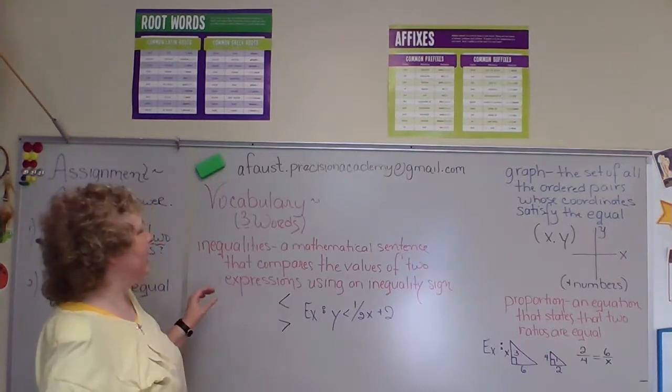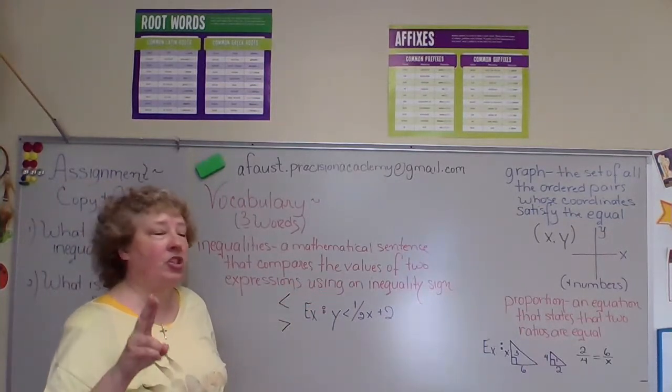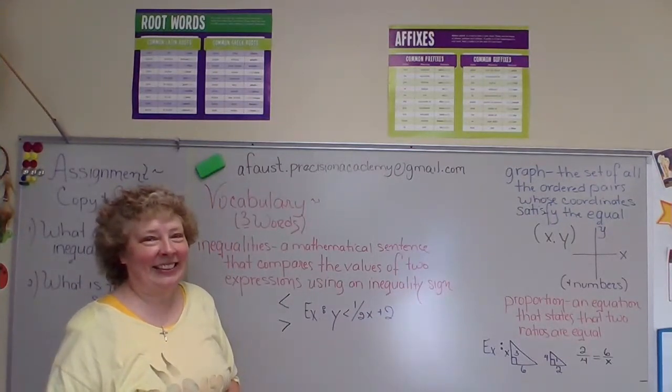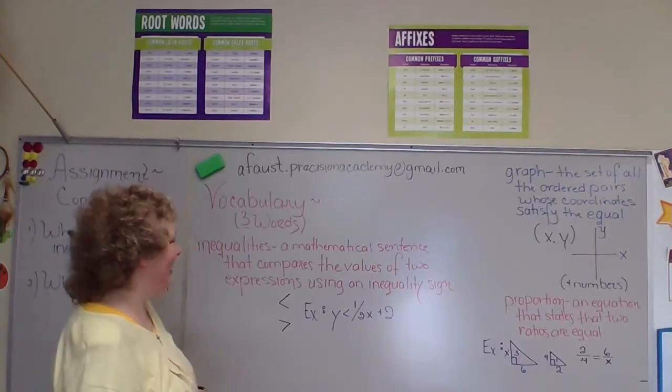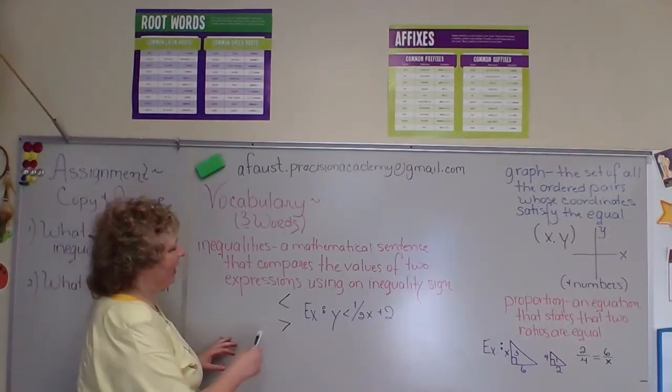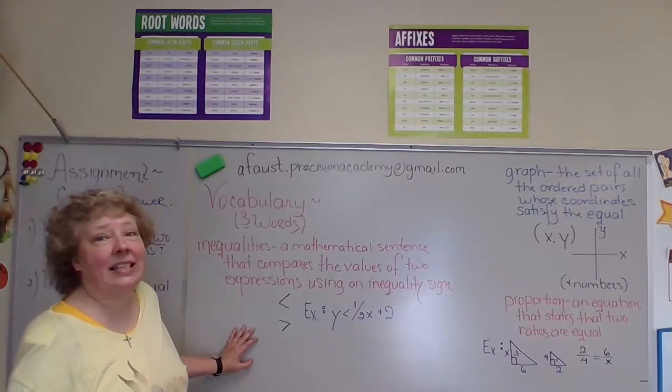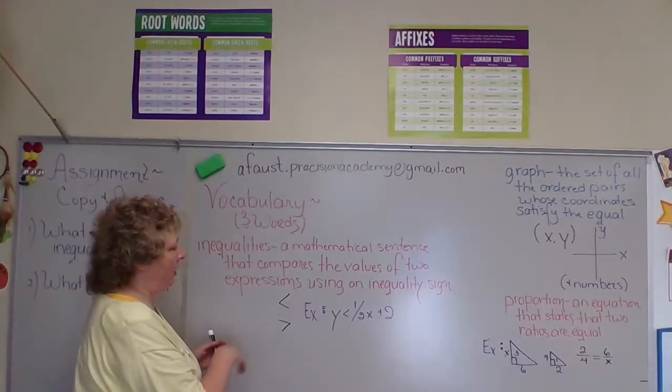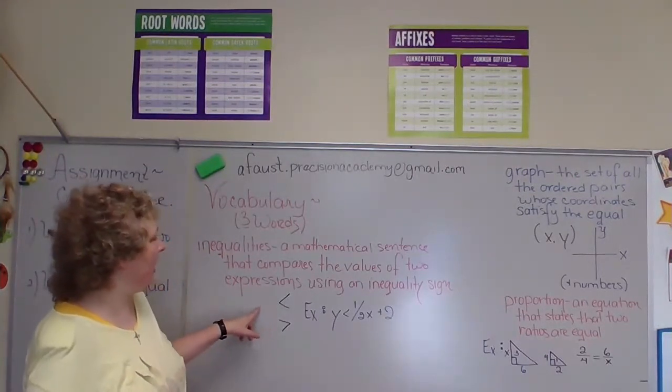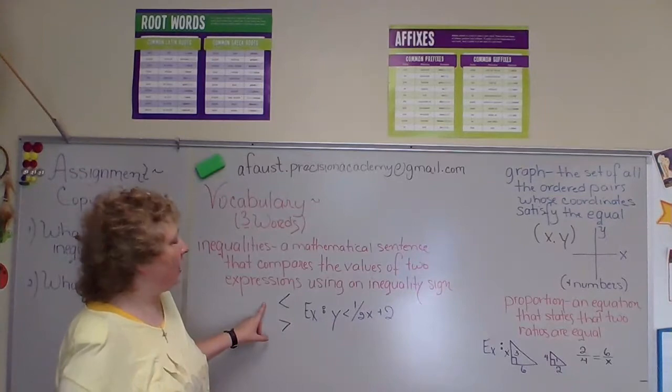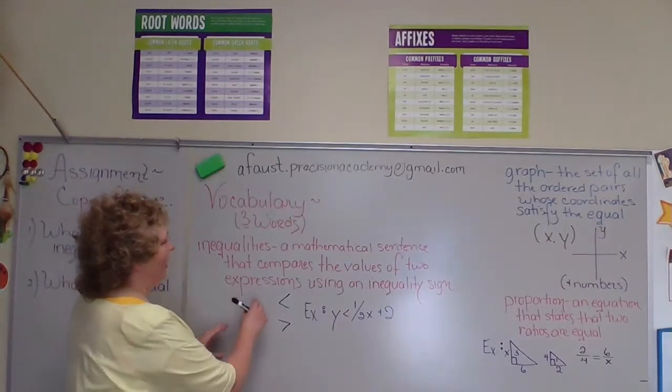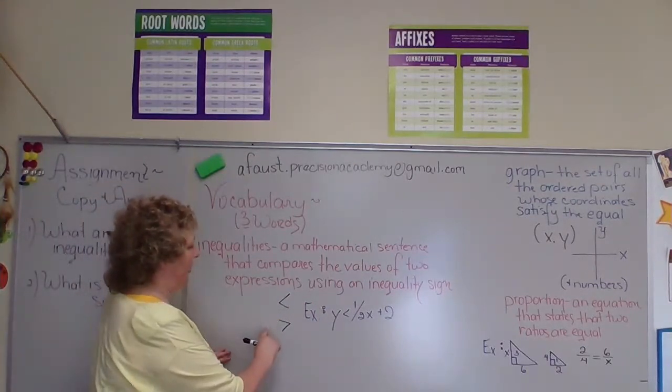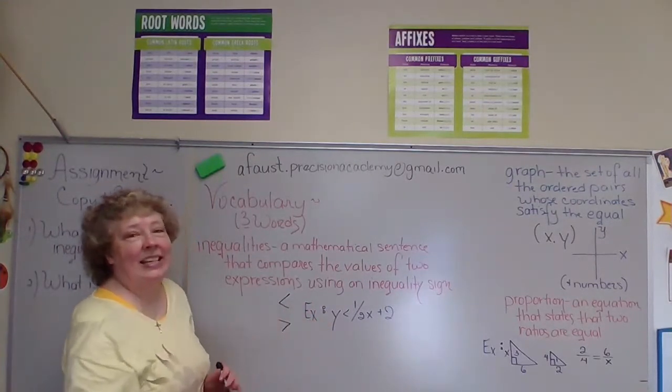Mathematical sentence that compares the values of two expressions using an inequality sign. Okay. All right. Here are the inequality signs. This is what we're basically talking about. We are talking about the signs. This one here meaning it's less than, whatever's over here is less than what's over here. This one meaning whatever's over here is greater than what's on that side. Does that make sense?